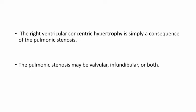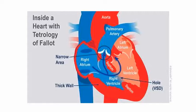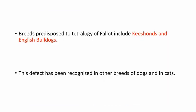Inside a heart with Tetralogy of Fallot, here you can see a hole — that is, a defect in the ventricular septum — and a narrow area in the pulmonary artery, that is pulmonic stenosis, and the thick wall. This hypertrophy of the right ventricle and the overriding aorta. The breeds predisposed to this defect include Chisones and English Bulldogs. This defect has been recognized in other breeds of dogs and in cats as well.